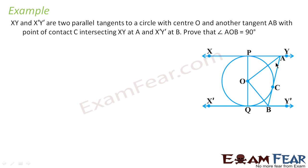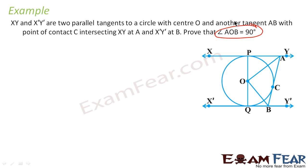The next question says: XY and X'Y' are two parallel tangents to a circle with center O, and there is one more tangent with C as the point of contact. We have to prove that angle AOB is 90 degrees. Since it involves angles, the first thing we know is that tangent lines are perpendicular to the radius, so the angles at the tangent points are 90 degrees.